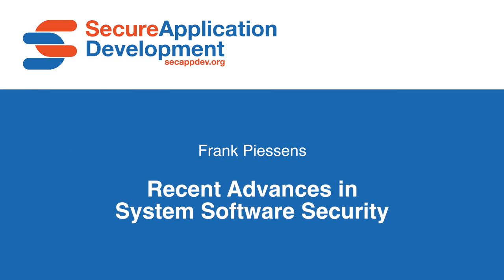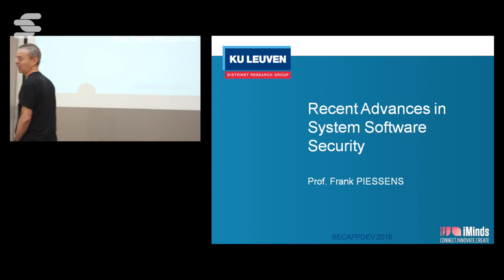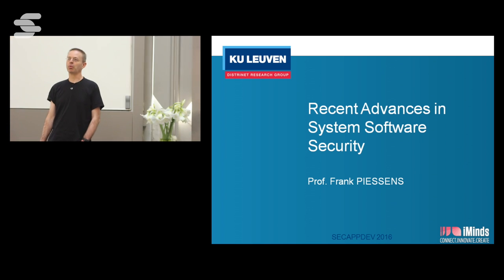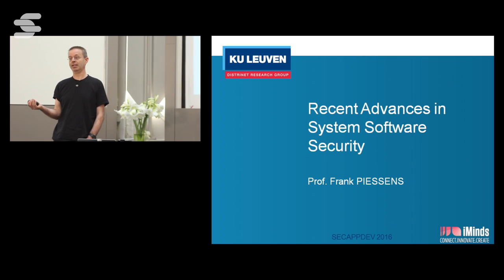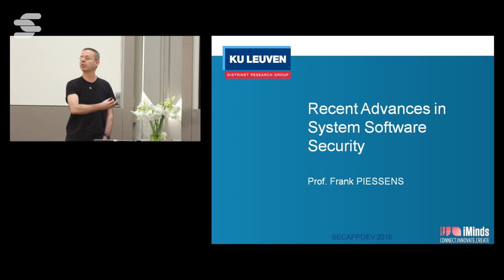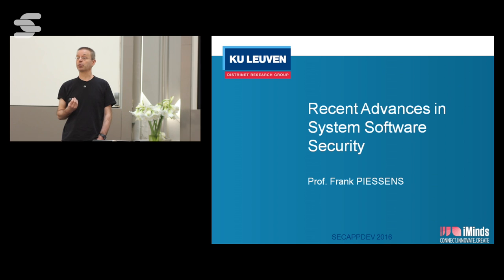Good morning and welcome to this talk on recent advances in system software security. This covers new emerging security topics for software you might typically want to write in C — things like servers written in C for performance reasons, operating system code, device drivers, and embedded code. It's the kind of code for which you might prefer C today, and that's still a significant fraction of the software being written.